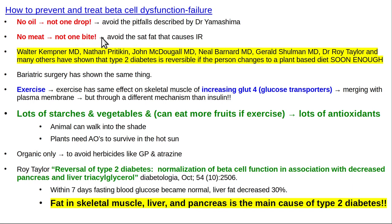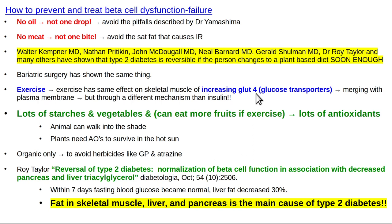To prevent beta cell dysfunction: no oil — especially not omega-6 oils which are destroying pancreatic beta cells — and no meat. Average meat is around 50% fat; even lean chicken is about 25% fat. All meat should be avoided for optimal health. Walter Kempner, Neal Barnard, John McDougall, Gerald Shulman, Roy Taylor, and many others have shown type 2 diabetes is reversible when patients switch to a very low-fat plant-based diet early enough. Exercise has a similar effect to insulin, mobilizing GLUT4 transporters to the plasma membrane to allow glucose entry into cells.